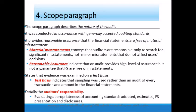The scope paragraph is a factual statement about what the auditor did in the audit. It states that the auditor followed generally accepted auditing standards, and for a public company such standards are issued by the Public Company Accounting Oversight Board. It states that the audit is designed to obtain reasonable assurance about whether the financial statements are free of material misstatements. The term 'material' conveys that the auditor's responsibility is to search only for significant misstatements likely to affect users' decision-making.